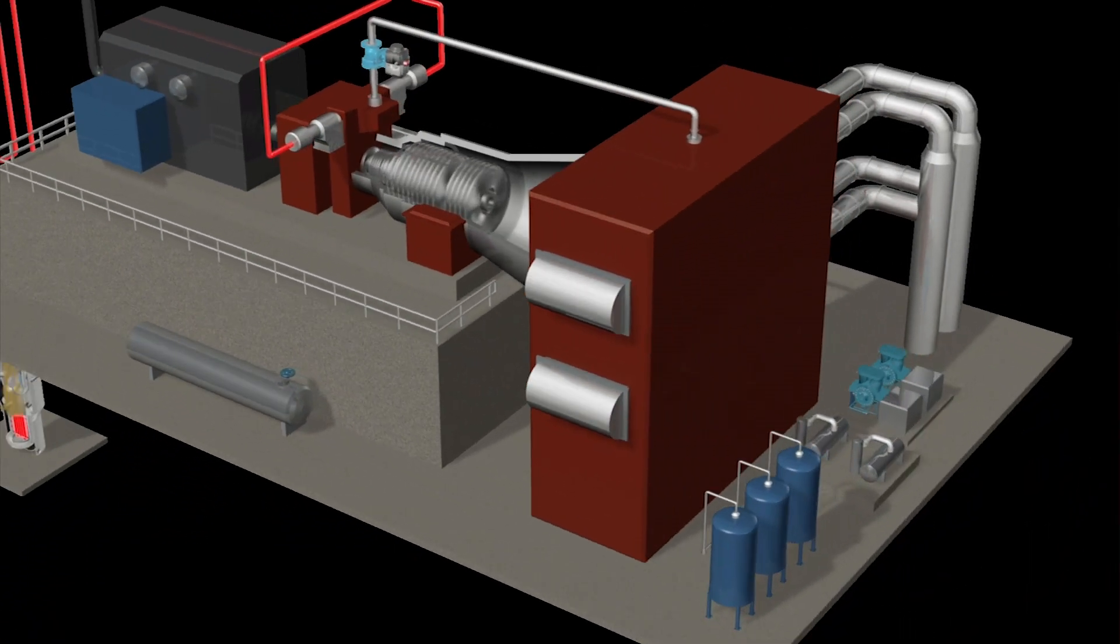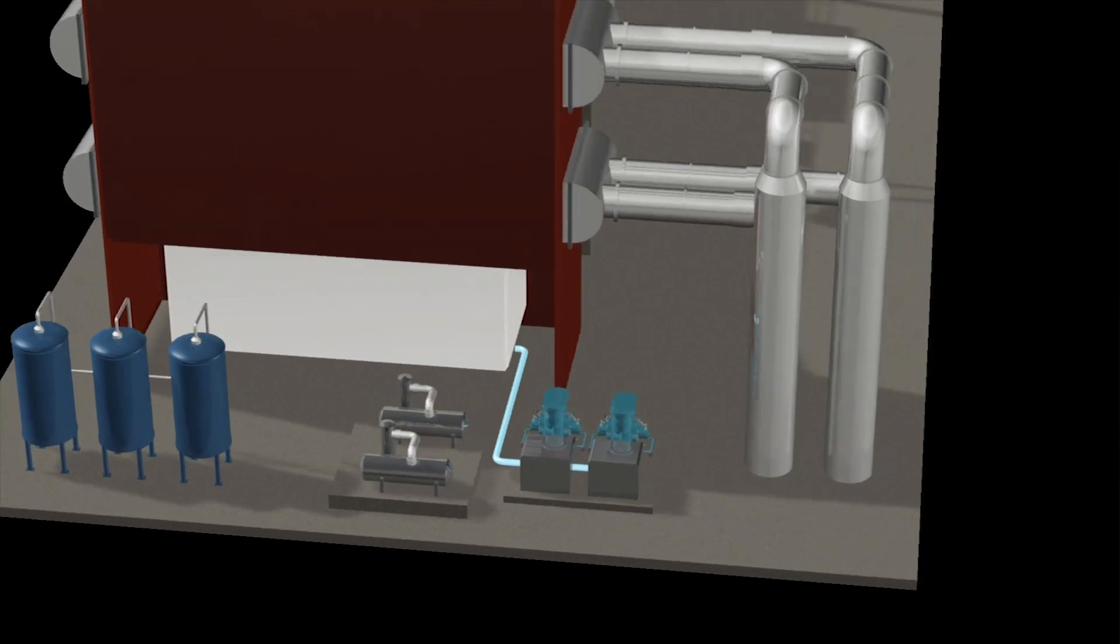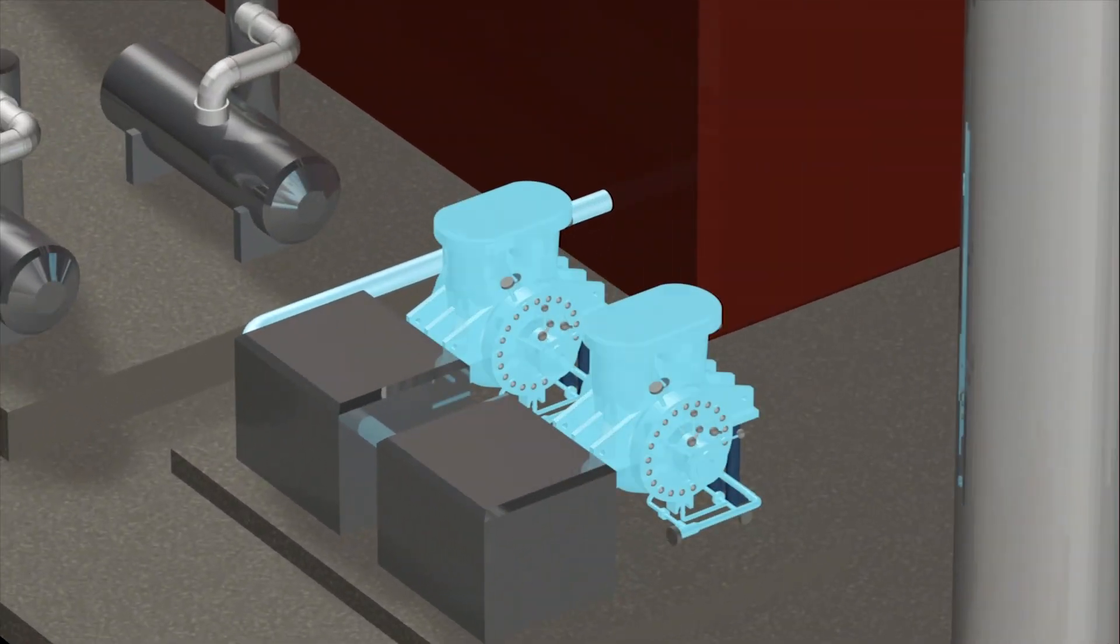Steam leaves the turbine and enters the condenser. The steam is cooled and returns to liquid water. Pumps send the water back to the steam generator, where the cycle repeats.